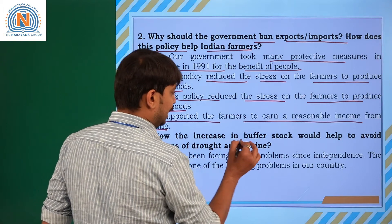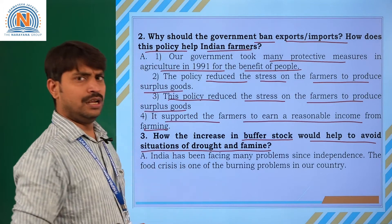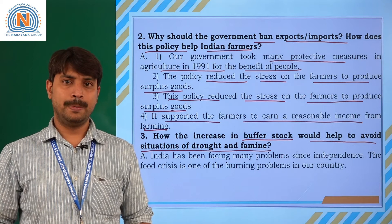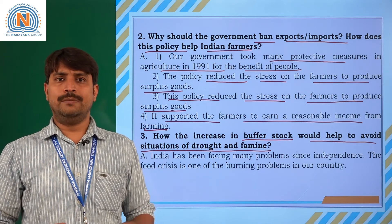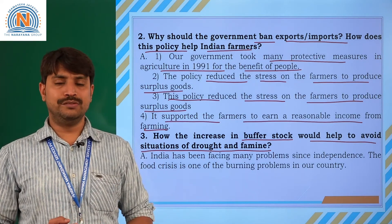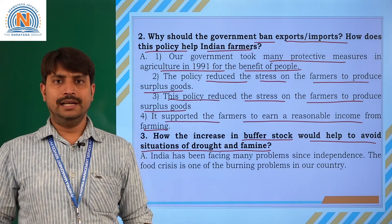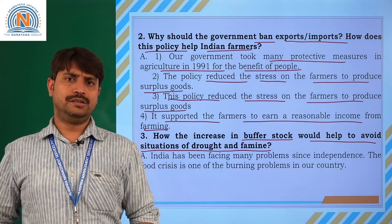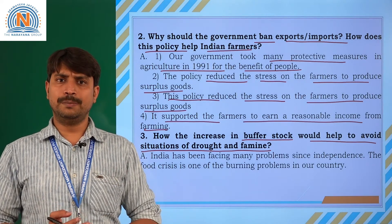How does an increase in buffer stock help to avoid a situation of drought and famine? For example, if heavy rainfall or no rainfall occurs, no proper cultivation takes place. At that moment the government struggles to provide food grains for the public. To avoid such situations, from 1991 the government placed a buffer stock — that is, storing food grains — so that whenever drought or famine occurs, these food grains can be distributed to the public.